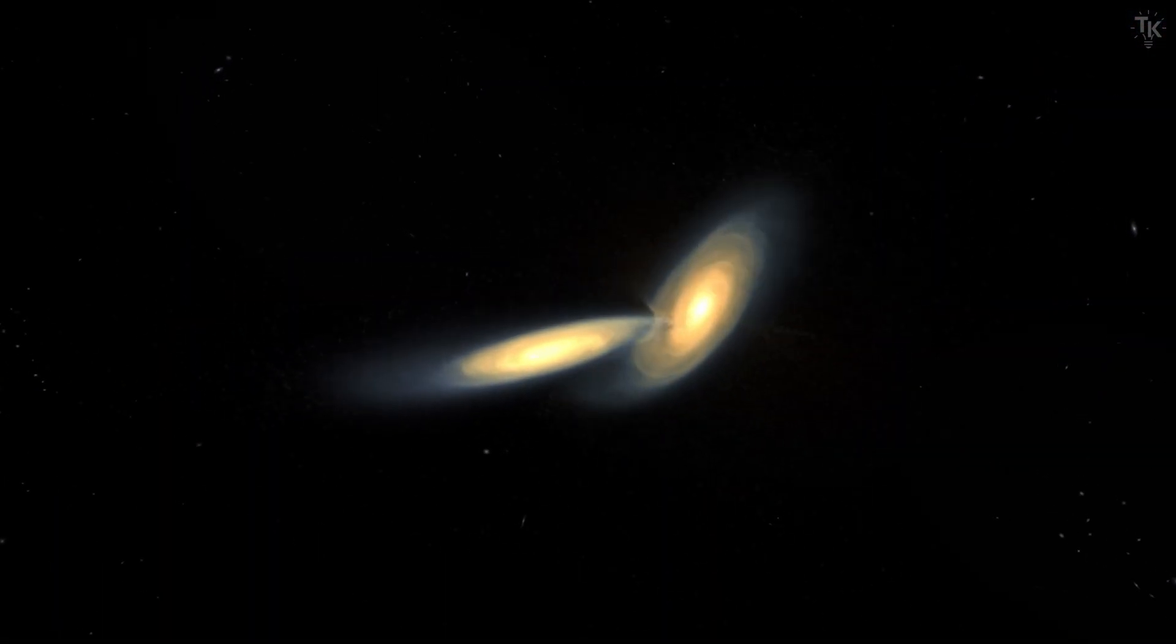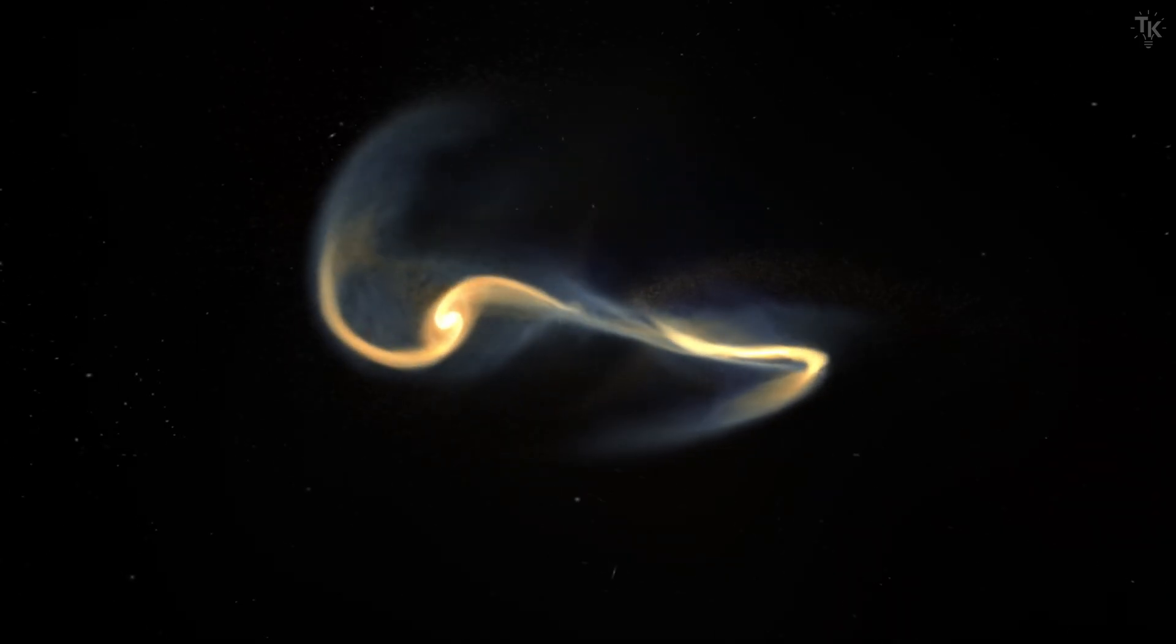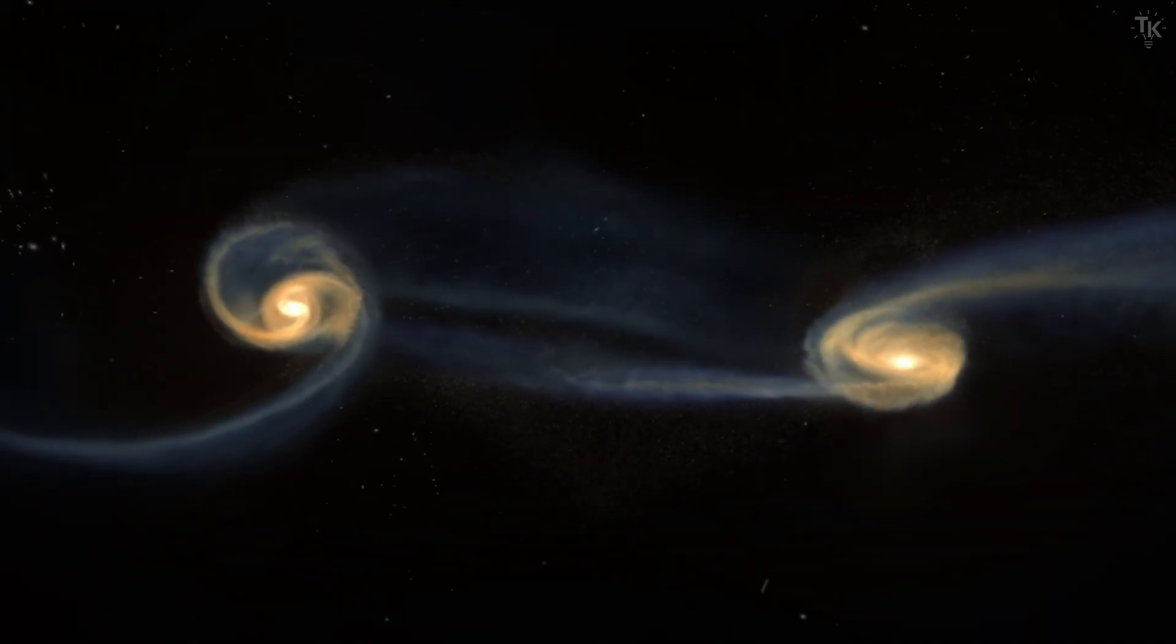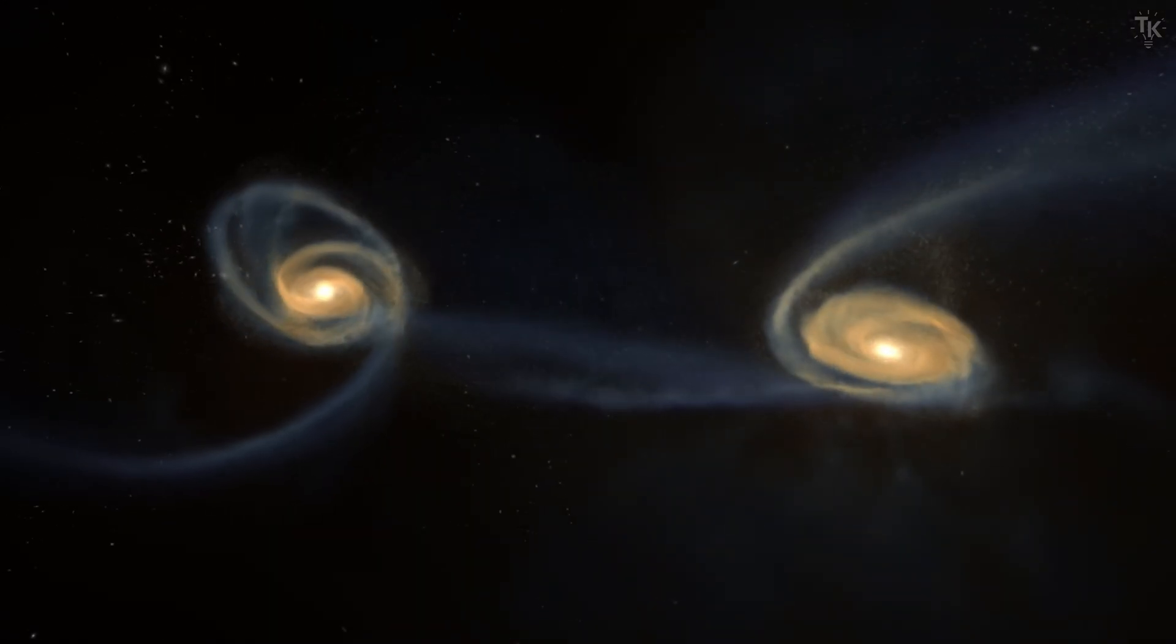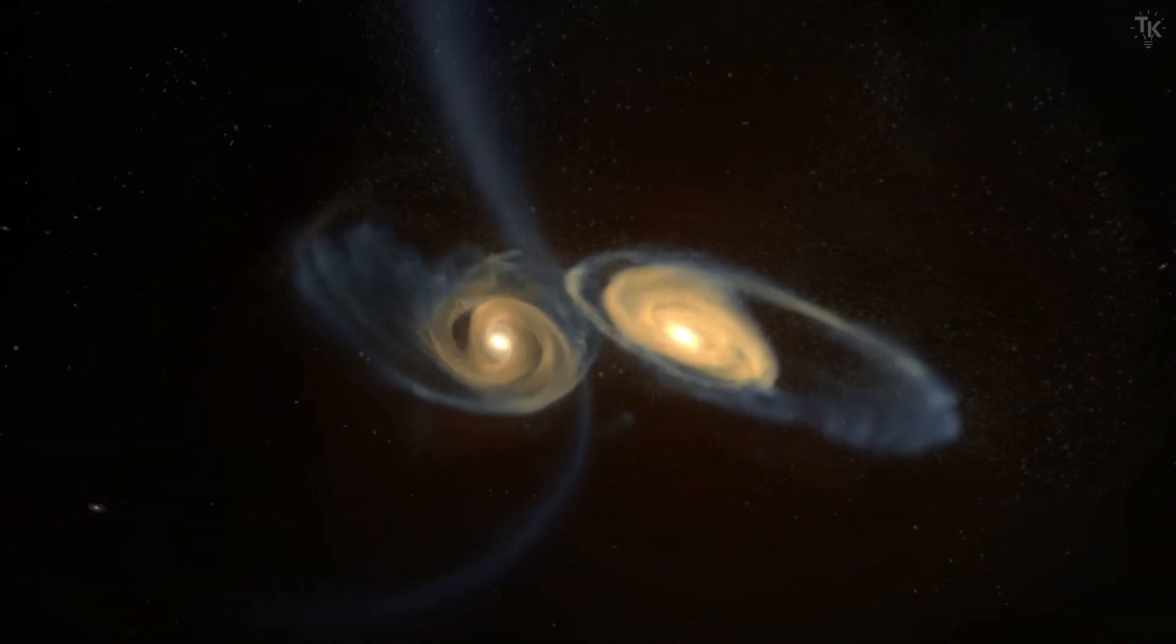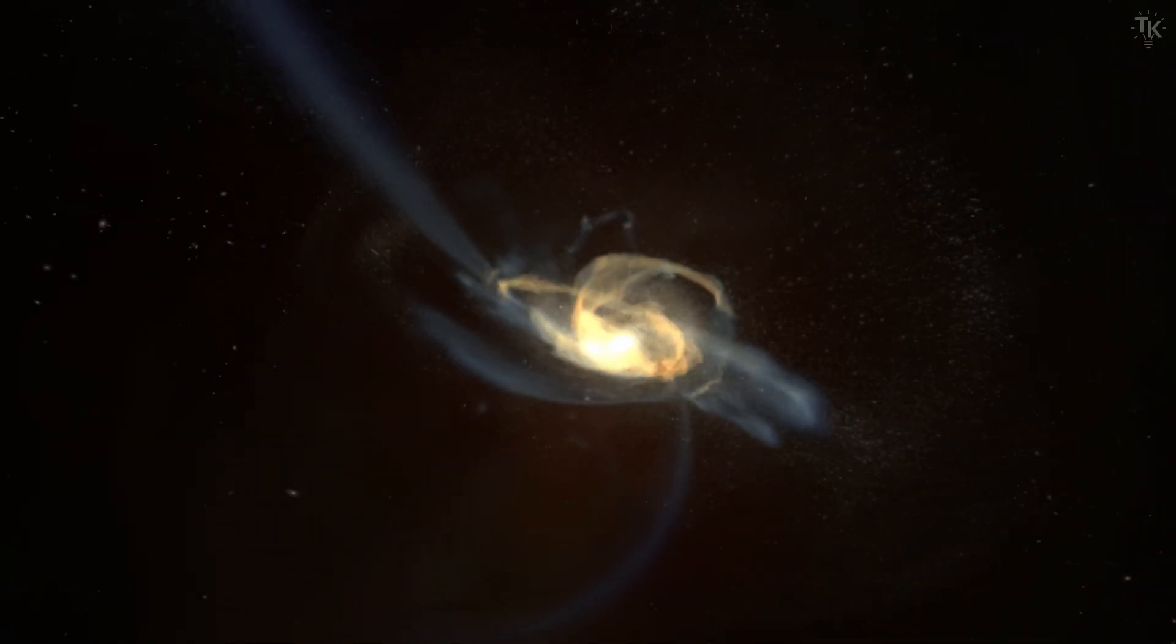For example, here we see two galaxies of roughly equal mass colliding. The galaxies crash violently, scattering stars and gas, which then come together again. In the process, almost all traces of the original galaxies disappear.